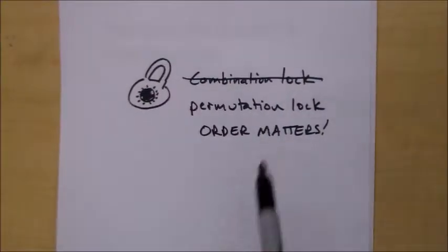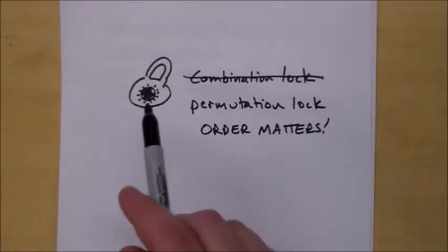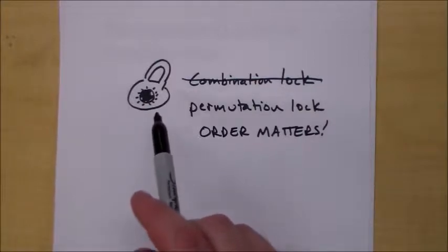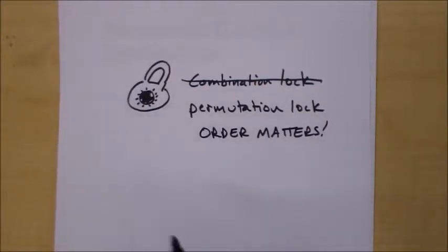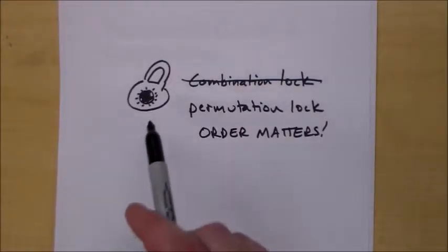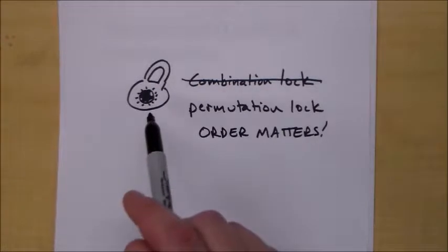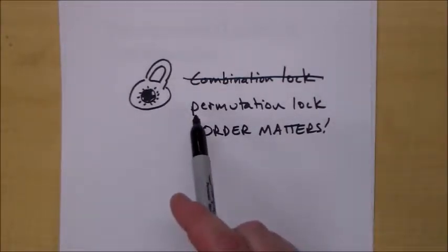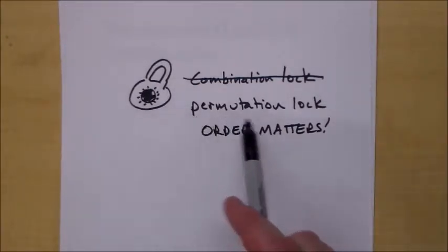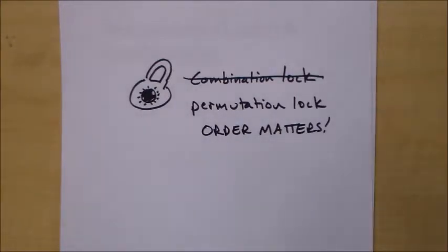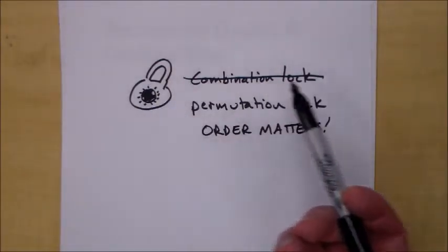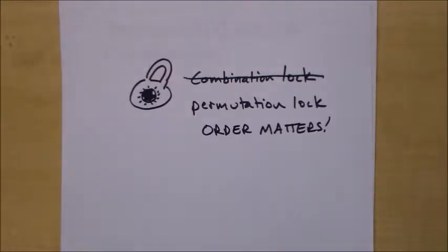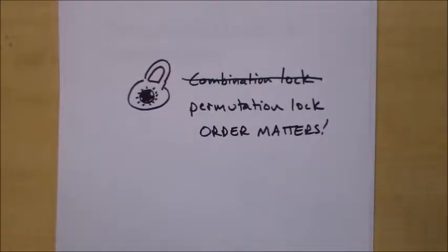The difference is because order matters. If your code is 1, 7, 4, in order for this lock to open, and you put those numbers in a different order, it will not open. Why? Because order matters, which means that in math nerd terms, it's a permutation lock. So sometimes when I see one of these with the name 'combination lock' at the hardware store, I'm like under my breath, 'permutation lock.' It's a nice nerd moment.